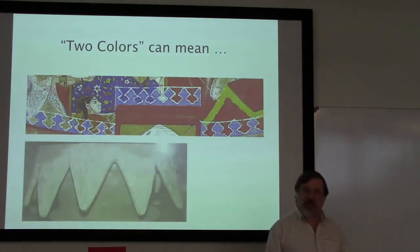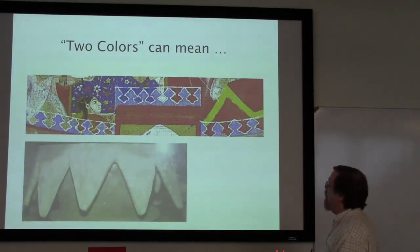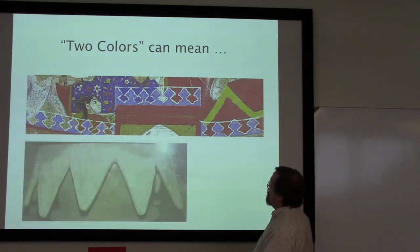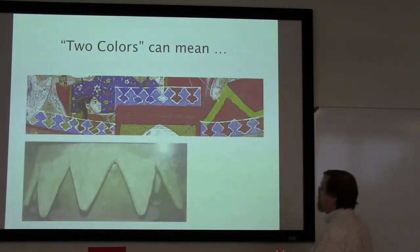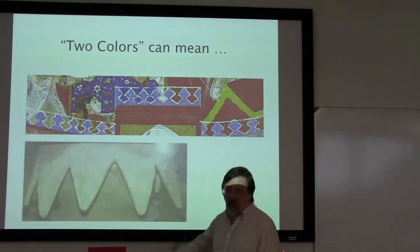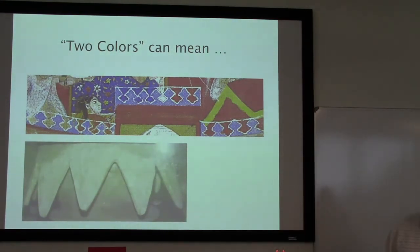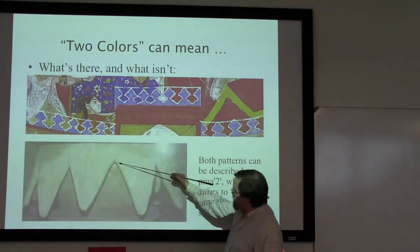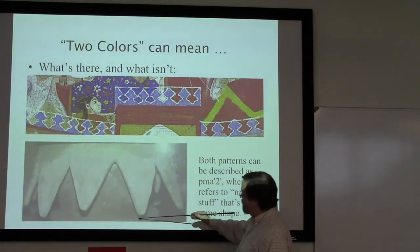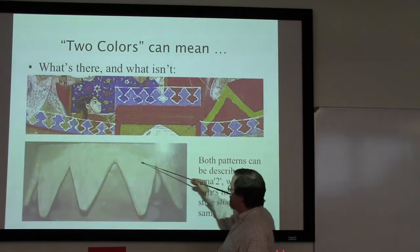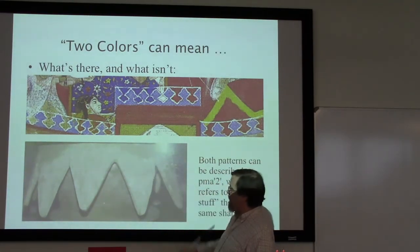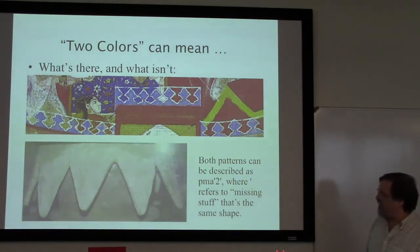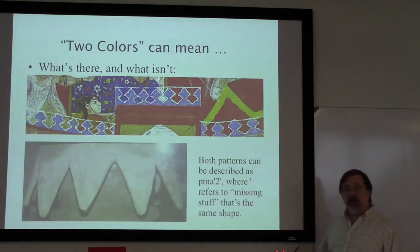This is a pot from the Logan Museum and we have the same sort of thing — a triangle shape coming down, but what's been cut away is exactly the same shape as what remains behind. So we can think of that as a two-color symmetry in this same sense: what is there and what is not there.